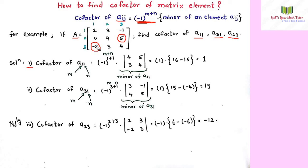To find the cofactor of a11, note that a11 is the element 2, belonging to the first row, first column. We apply minus 1 to the power 1 plus 1. To get the minor, we delete the corresponding row and column, and whatever is remaining becomes the minor.